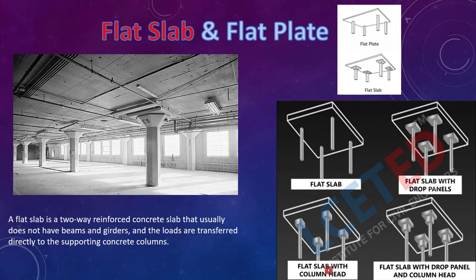The second type is flat slab with column head. There are two ways of basically stiffening the joint — either by providing a drop, or the second way is to make the column head enlarged. In general situations we will use the flat slab with a drop panel as well as the column head. A flat slab is a two-way reinforced concrete slab that usually does not have beams and girders, and the loads are transferred directly to the supporting concrete columns.